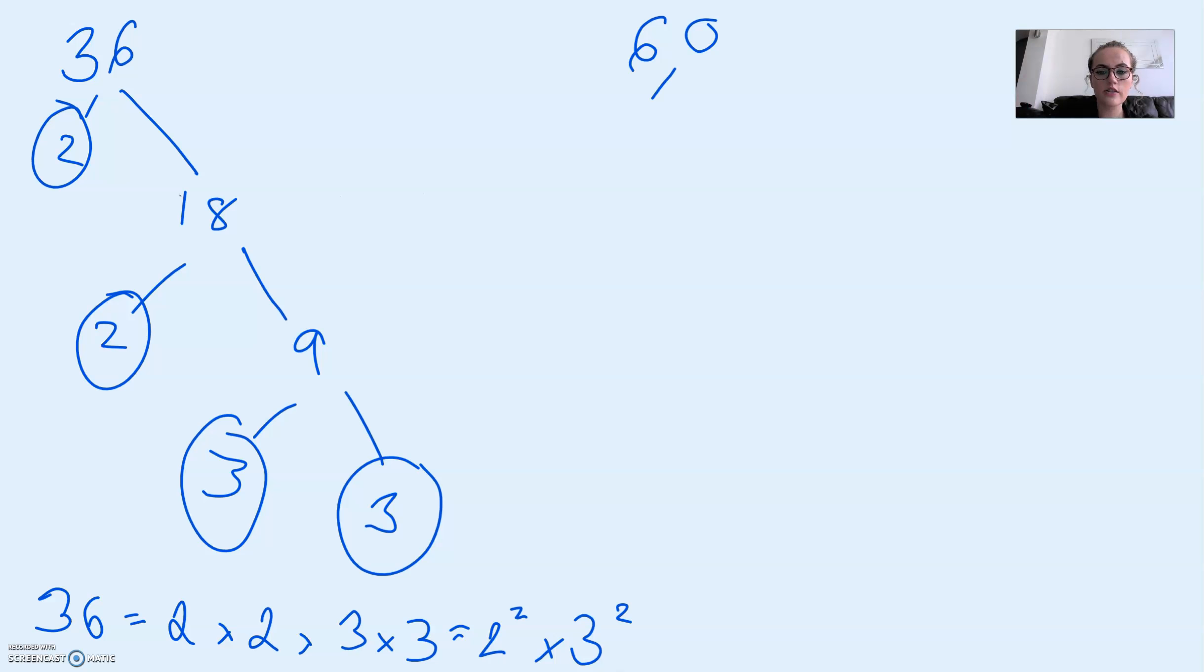Let's do the same for 60. So 2 is the prime that divides 60. We're left with 30. 2 divides 30 and we're left with 15. 3 divides 15 and we're left with 5, which is a prime. So therefore we have 60 equals 2 times 2 times 3 times 5. And 2 times 2 is the same as 2 squared times 3 times 5.